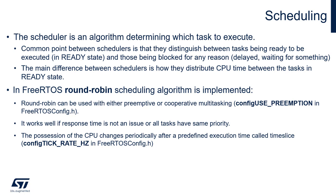Round-robin works well if response time is not an issue and all tasks have the same priority. The possession of the CPU changes periodically after a predefined execution time called a time slice. This time slice is defined with the configTICK_RATE_HZ constant, which is defined in FreeRTOSConfig.h. We can also influence execution time and the number of tasks to be executed by setting proper priorities, effectively limiting the number of tasks in ready state. We will touch on this topic later in this presentation.